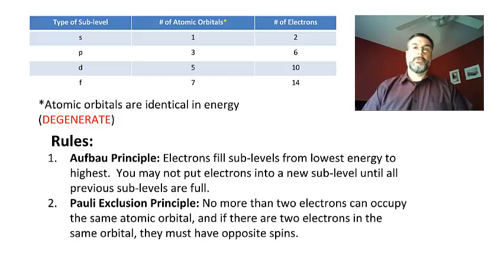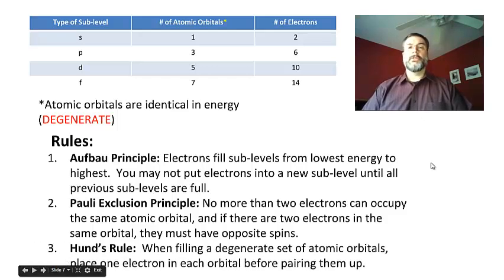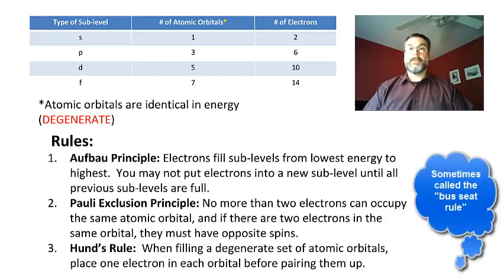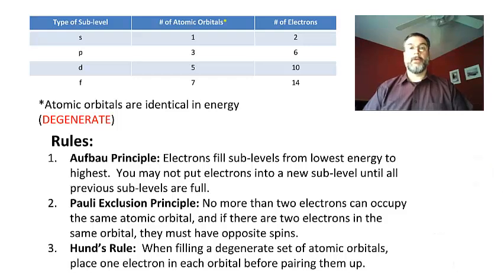The second rule is the Pauli exclusion principle, and this one says that no more than two electrons can occupy the same atomic orbital, and if there are two electrons in the same orbital, they must have opposite spins. This is our desk rule. No more than two students at a desk, but if there are two students at a desk, they have to face in opposite directions. That's what that means. We'll talk about spin in just a second. It's not a huge deal. And then our final rule is called Hund's rule. This was when filling a degenerate set of atomic orbitals, place one electron in each orbital before pairing them up. Remember, multiple desks in a room, students come into the room. They have to sit by themselves first before they can pair up. That's Hund's rule. It applies to electrons and orbitals as well.